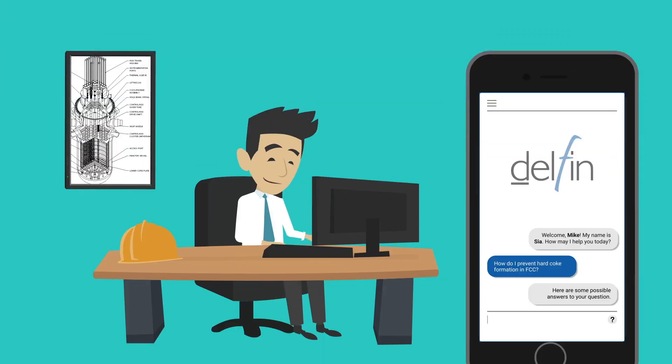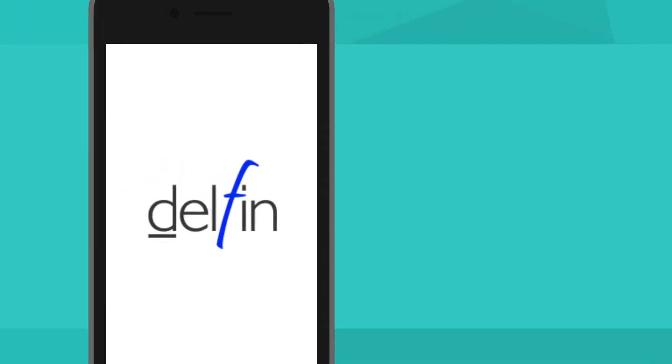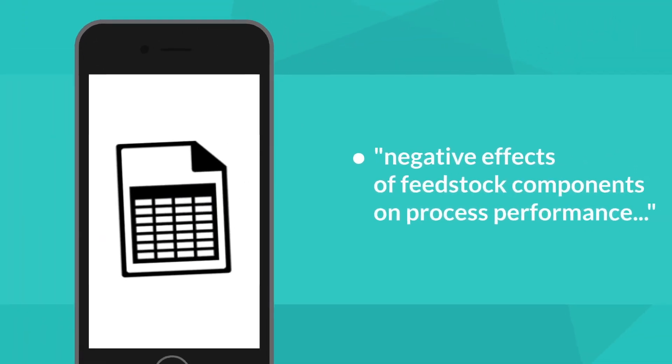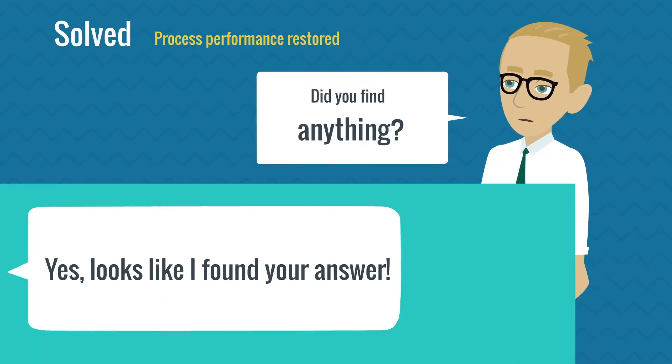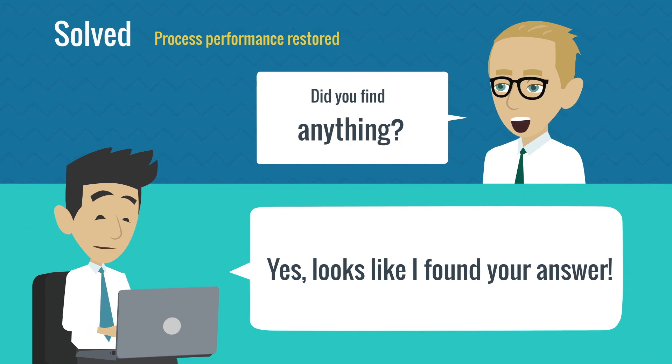Mike follows up by asking SIA for relevant literature references. SIA immediately identifies a publication that discusses the negative effects of similar feedstock components on process performance. Armed with this information, Mike responds to his customer with the recommendation to minimize the suspect component in the feedstock to resolve their issue.